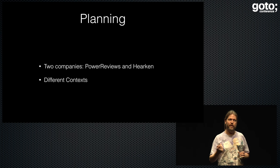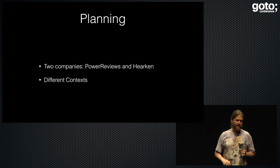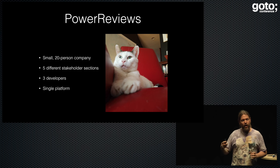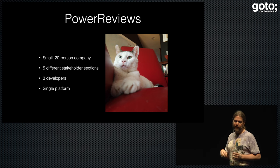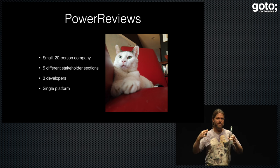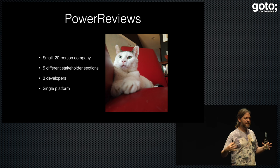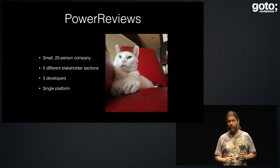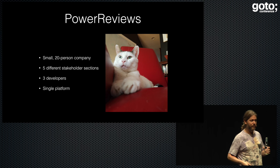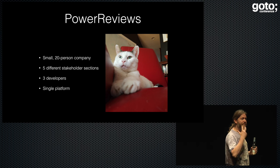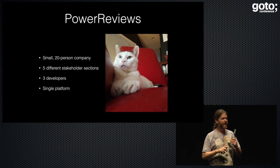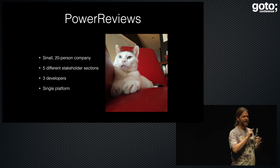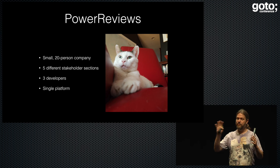There are two companies: one is called Power Reviews, one is called Harkin. Power Reviews, which I worked at previously, was small — we had 20 people. The interesting thing was that it was very small but we had five different stakeholders all asking the dev team to work on this single platform. We had three developers, five stakeholders — sales, content, marketing, and others. Power Reviews was a company that did online ratings and reviews for products.